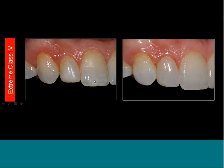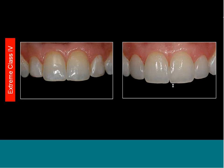The polishing sequence: discs for gross reduction, fine diamonds for anatomy and shaping, carbides for further smoothing, Jiffy brush to start the shine, then reamelize or diamond paste on a goat wheel to buff it up. Here's the lateral before and after — for a female patient, a nice teardrop shape, a little rounder than for a male. Conservative composites — could we do veneers here? Yes, but we'd have to prep more tooth away and lose the advantages of one visit, renewability, and the other benefits we discussed at the beginning.